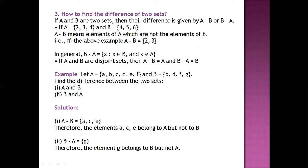A minus B will denote the elements of A which are not elements of B. It means we have to cover those elements that are included in A but not included in B. For example, if set A is {2, 3, 4} and B is {4, 5, 6}.